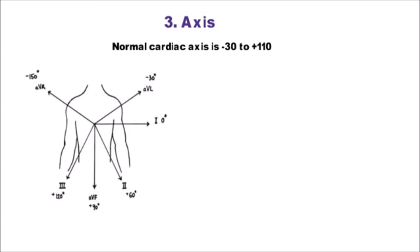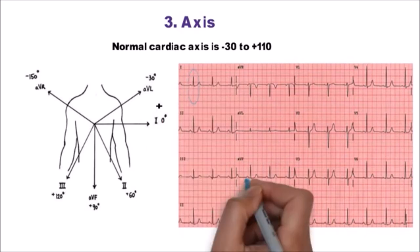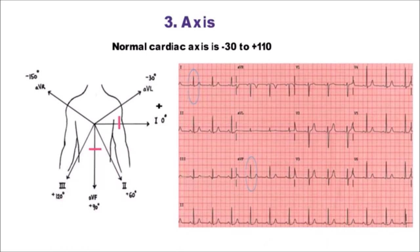Now to calculate the axis most commonly we use perpendicular leads i.e. lead 1 and avf. In this ECG, net QRS complex in lead 1 and avf are positive. So if we plot these positive deflections on this diagram we will get a vector in the normal cardiac axis range. So this is a normal axis ECG.